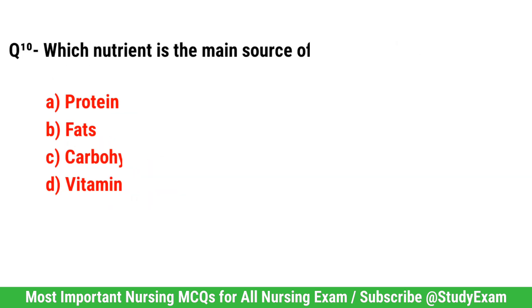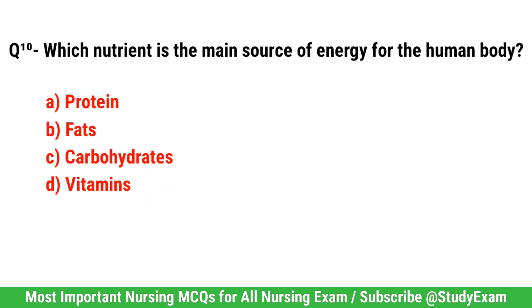Question No. 10. Which nutrient is the main source of energy for the human body? Correct option is C. Carbohydrates.